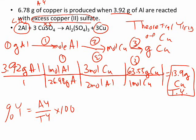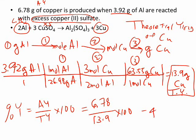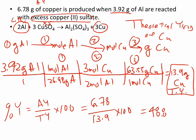So let's find the percent yield: actual yield divided by theoretical yield times 100. We were about half off, so it's going to be about 50%. We have 6.78 divided by 13.9, times 100, which equals 48.8%. That's not very good — you want to be as close to 100% as possible, but that's what it is.